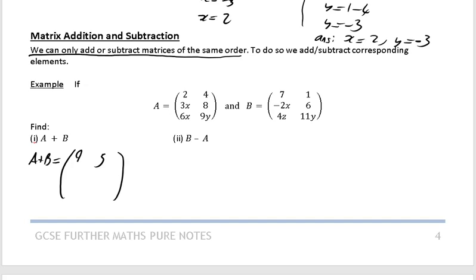Your second row, first column is going to be 3x plus minus 2x, which is just going to be x. And then 8 plus 6 is going to be 14.